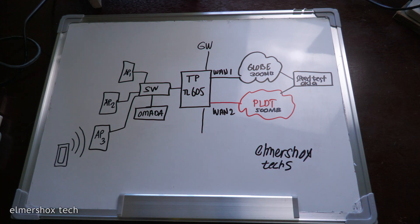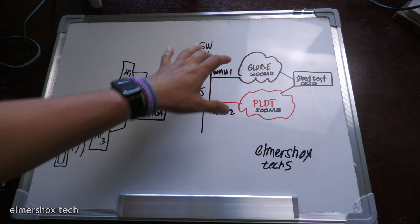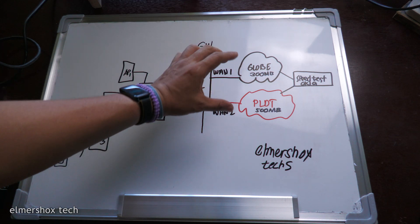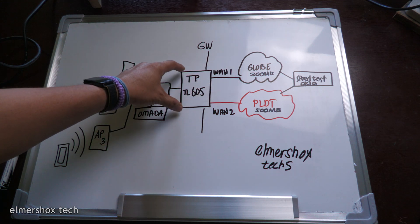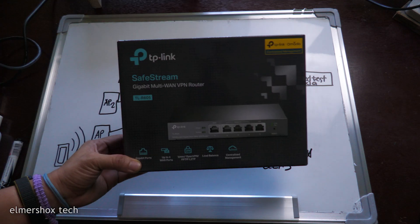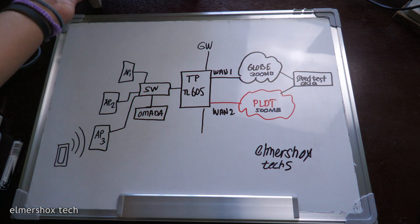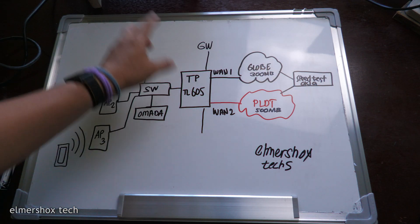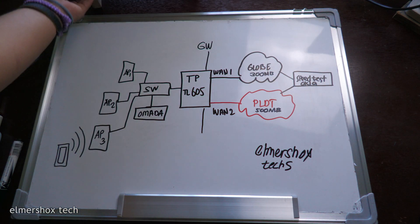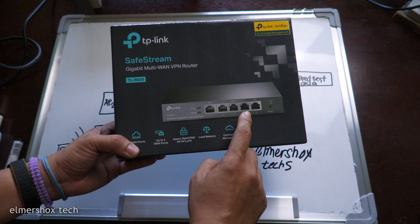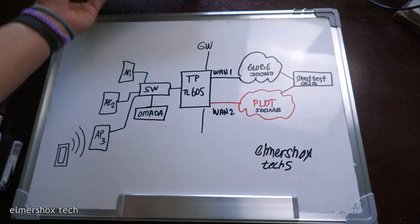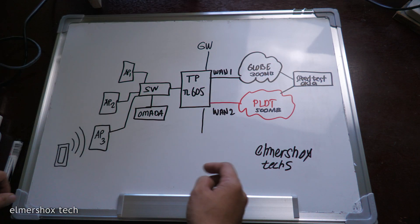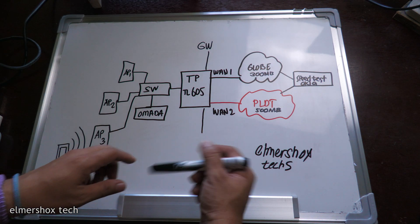For this episode, we'll be discussing if two ISPs will be added if they are connected on the same TP-Link TL605 router. This is a multi-WAN router, so it has four ports that can be enabled as WAN interface — or wide area network — facing the ISP.